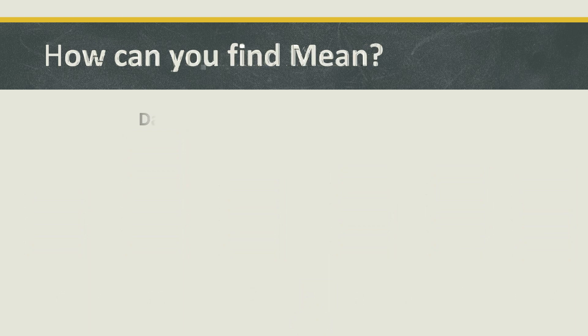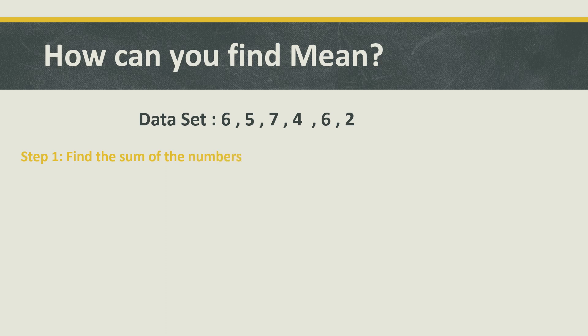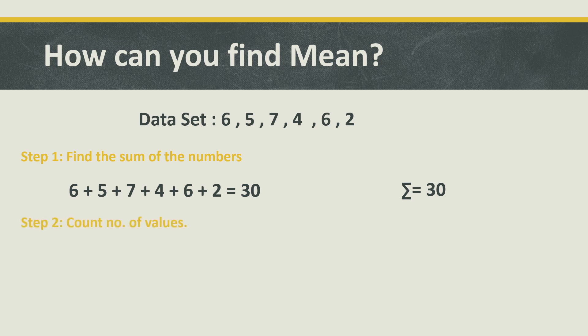How can you find mean? Let's suppose you have a data set and you want to find its mean. Your first step will be finding the sum of the numbers — just add all the numbers: 6 plus 5 plus 7 plus 4 plus 6 plus 2, and the sum will be 30. You can represent its sum with the sign: sum equals 30.